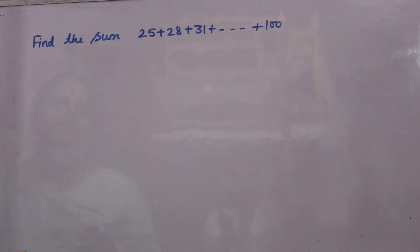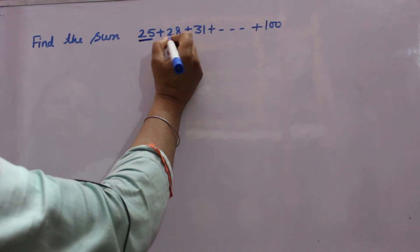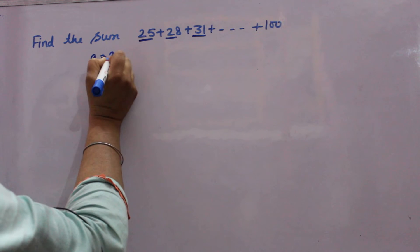Find the sum 25 plus 28 plus 31 plus up to 100. Now see, it is a series AP because A is 25, first term.